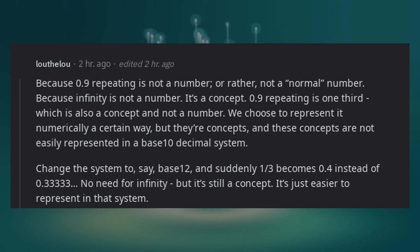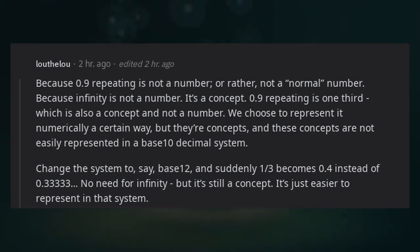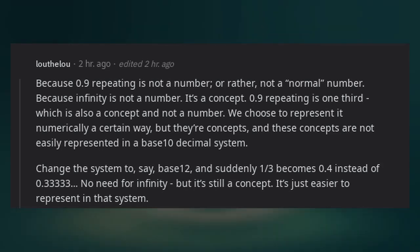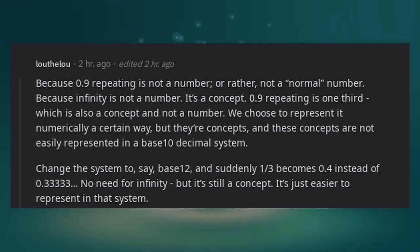Because 0.9 repeating is not a number, or rather, not a normal number. Because infinity is not a number—it's a concept. 0.9 repeating is one third, which is also a concept and not a number. We choose to represent it numerically a certain way, but they're concepts. And these concepts are not easily represented in a base 10 decimal system.